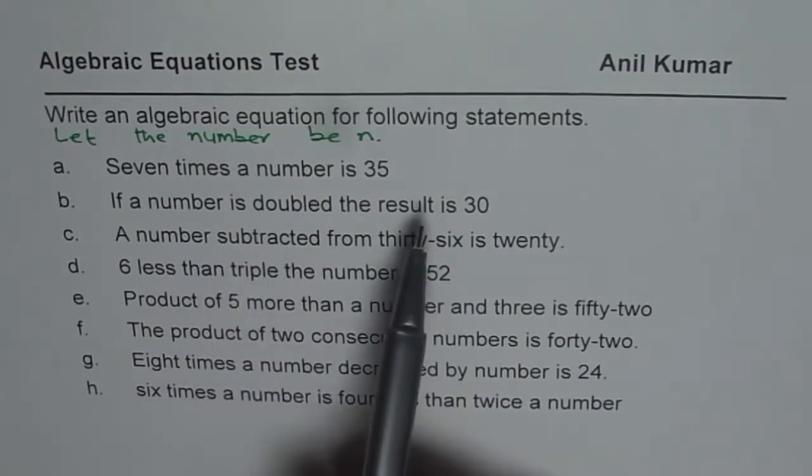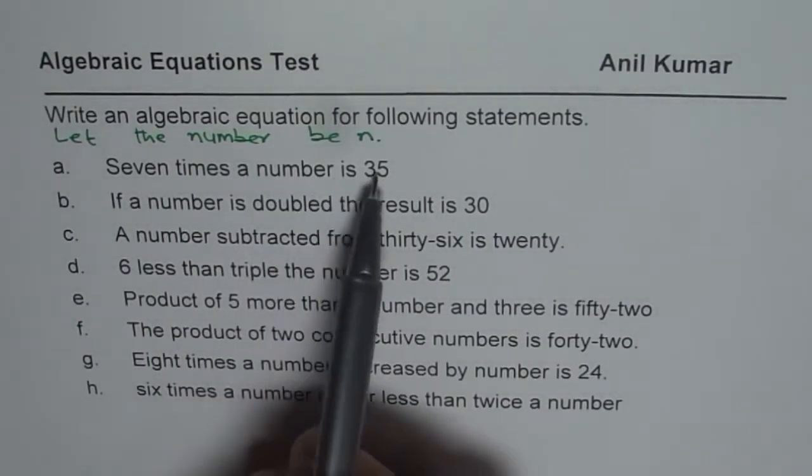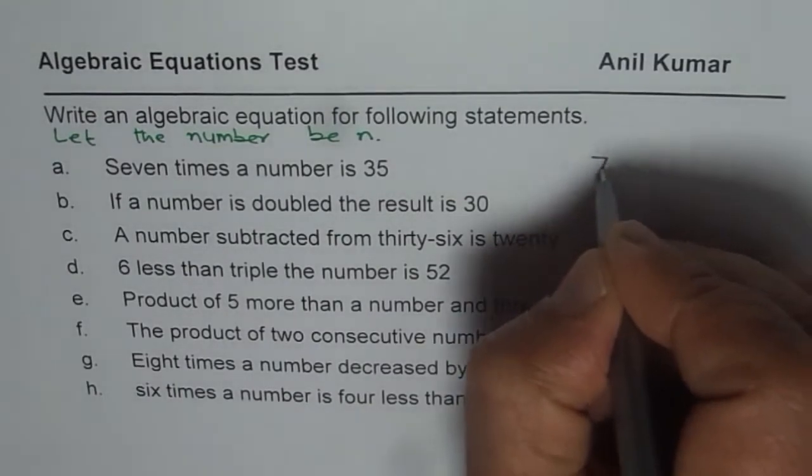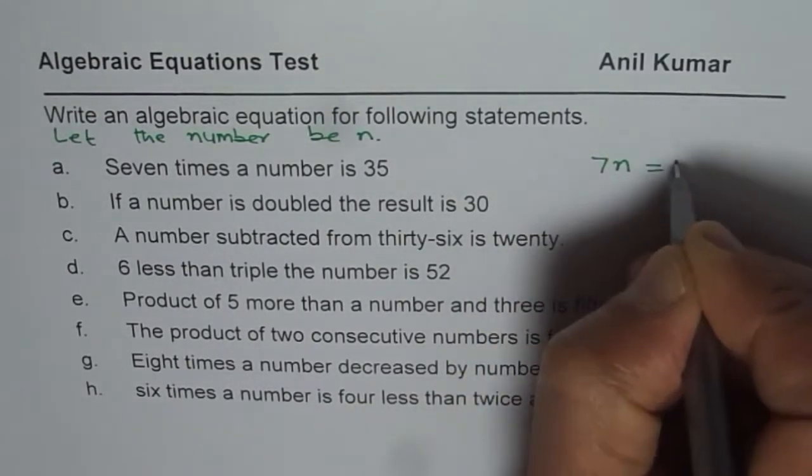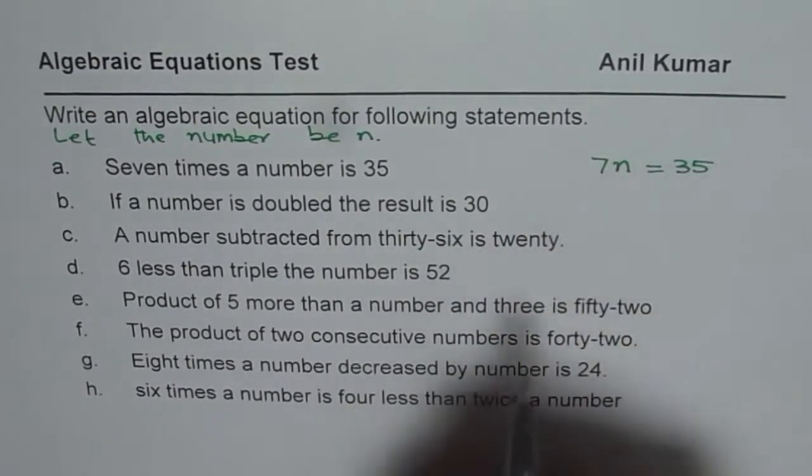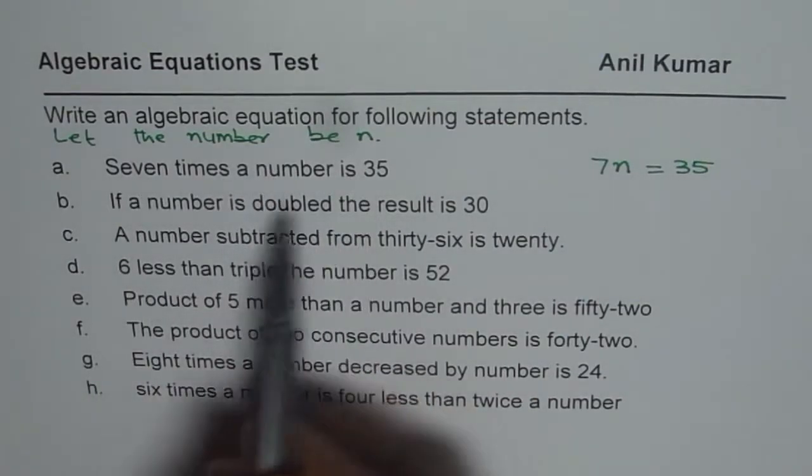Now we will write the equation. 7 times a number is 35. That means, 7 times n is equal to 35. So that becomes an equation which represents the given statement.